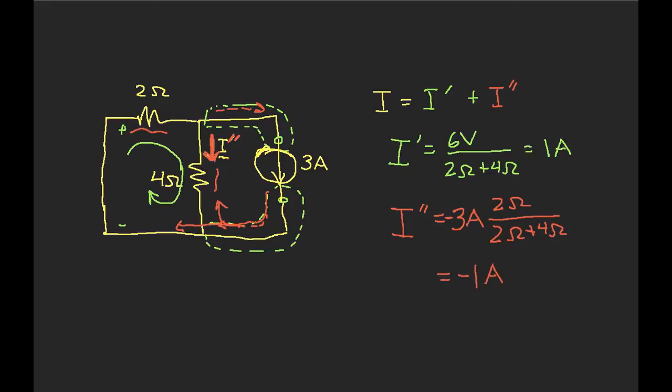Okay, so this tells me then, that the total current is going to be I, 1 amp, here we'll draw this in the appropriate color. 1 amp plus negative 1 amps, or 0 amps. In other words, in my original circuit, the current that flows through the 4 ohm resistor is 0. And, there we go, we've used superposition to solve for a current that flows through a resistor.